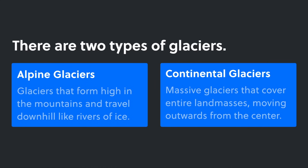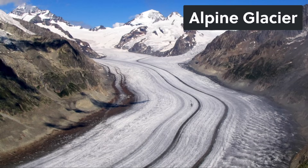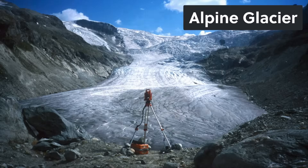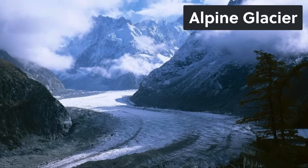Here's an alpine glacier, and you can see it looks just like a river of ice — all of these flowing slowly downhill, carving out the rock as they go.